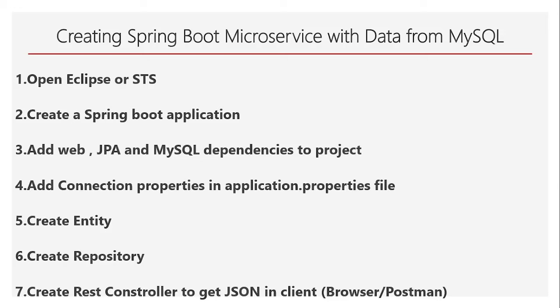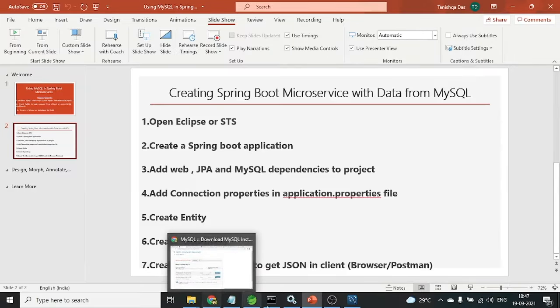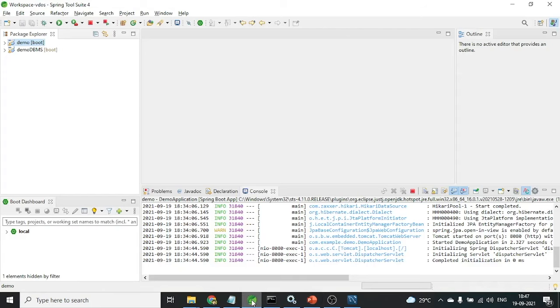Once your application is ready in STS, you will find the application.properties file already present in your project. In application.properties you have to supply the connection information — which database you want to connect to, the username, password, and DDL properties. Based on that information the database connection will happen. Then comes the coding part: first create a class which will be the entity representing the database table; next create the repository interface; and finally create the controller providing the endpoint or API to accept requests and provide JSON responses viewable in a browser or Postman.